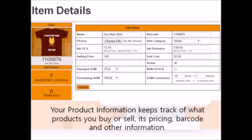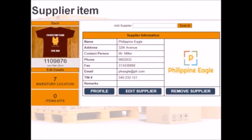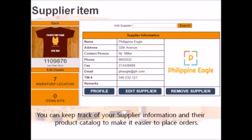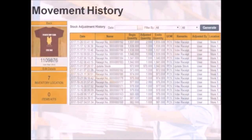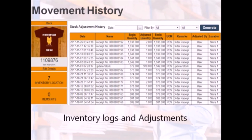As we add new items, the product information keeps track of purchases and sales, its pricing, barcode, and other details. The inventory location is a quick shortcut to knowing the quantity per location. Since items can be tagged to a supplier, it becomes easier to view their product catalog and place orders. Any adjustments or logs made are recorded in the item's movement history.